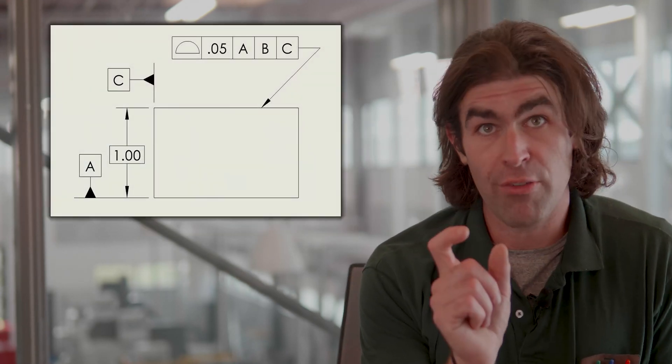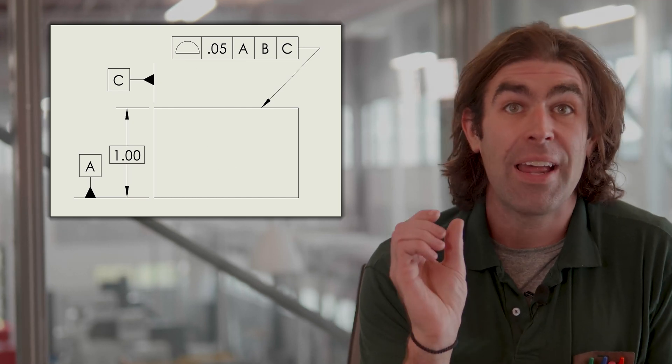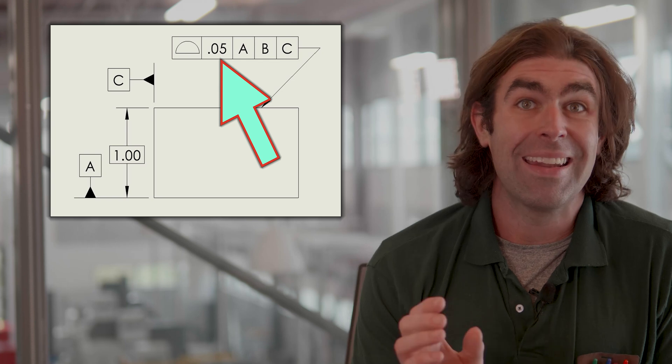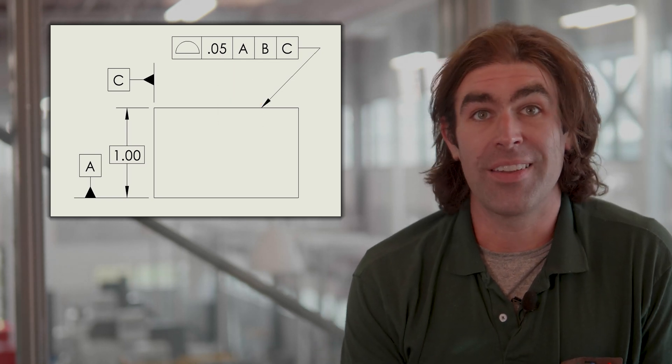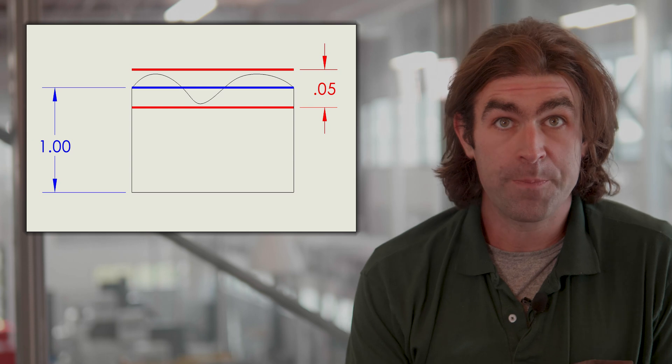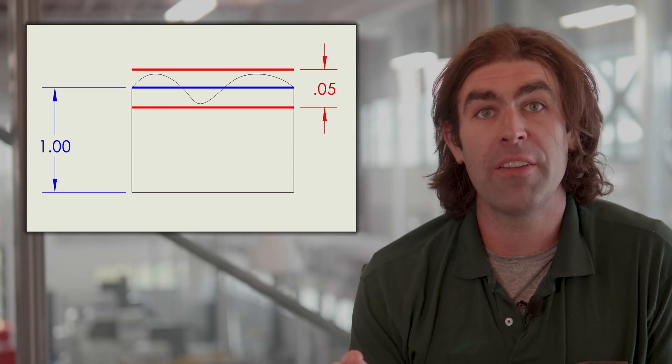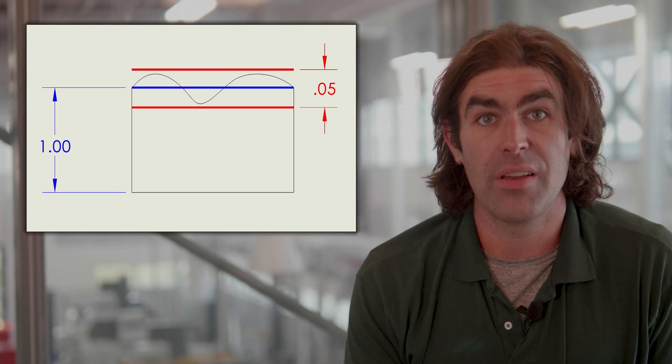When you read a profile tolerance you've got your profile symbol, whether it's profile of a surface or profile of a line, and you've got your tolerance value. Now that tolerance value is total tolerance. It's not plus or minus. So if you have 50 thousandths of tolerance, and you've got a true profile and a bilateral equal tolerance zone, which is the default, you'd have 25 thousandths on one side of the part, 25 thousandths on the other.